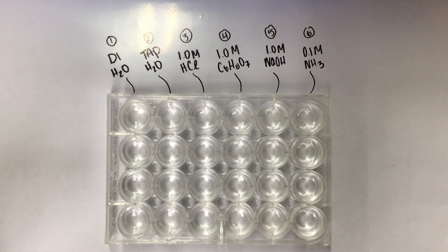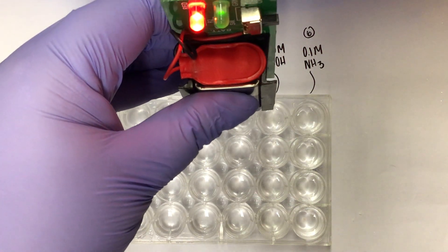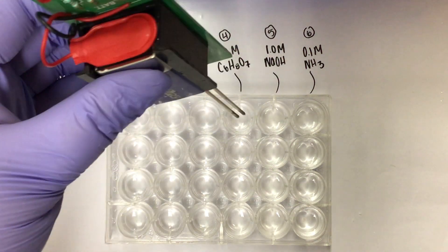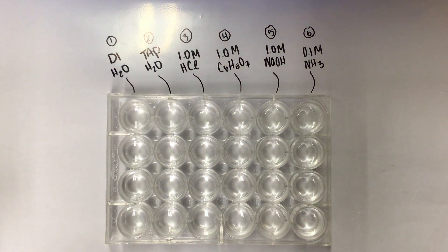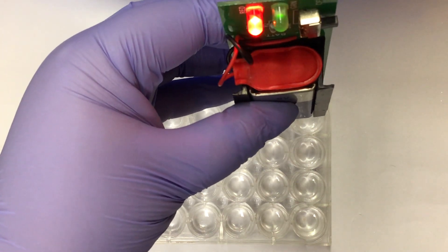Next, 1.0 molar C6H8O7. Both lights light up. Next, 1.0 molar NaOH. Both lights light up.